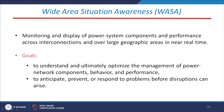The second standard area is wide area situation awareness (WASA). The aim is to monitor and display the performance of power system components across interconnections over large geographic areas in near real time. Our system is geographically very large — we have northern, southern, eastern, western, and northeastern grids — and we need to monitor all generating stations, distribution systems, transmission, loads, and renewable sources across this vast network.